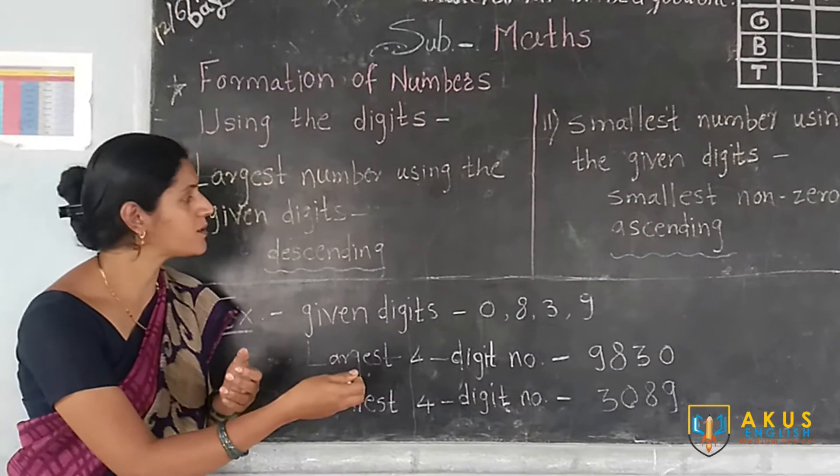Descending means we place the greatest digit first, from left to right. So first put 9, then 8, then 3, then 0 — giving you 9830, the largest 4-digit number. To form the smallest 4-digit number, arrange in ascending order but start from the smallest non-zero number. Here, 0 is smaller than 3, but if we place 0 first we get a 3-digit number. So we put 3 first, then 0, then 8, then 9 — giving 3089, the smallest 4-digit number.